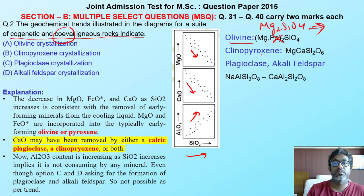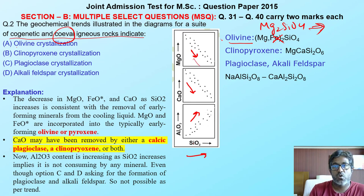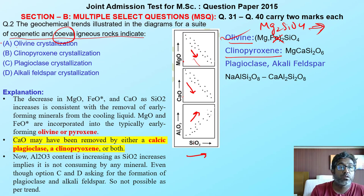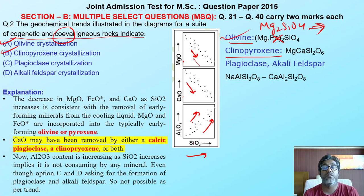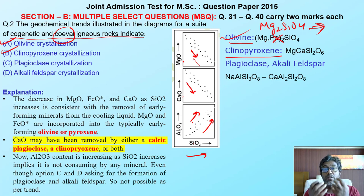As SiO2 increases and MgO decreases, olivine can form. Since clinopyroxene contains both MgO and CaO, and these are present, clinopyroxene can also form. But why not plagioclase or alkali feldspar? Because as SiO2 increases, Al2O3 also increases — it is not being consumed. If Al2O3 is not diminishing, it means it is not being used to crystallize plagioclase or alkali feldspar. So those minerals are not forming.